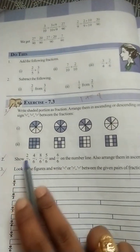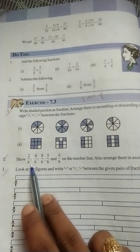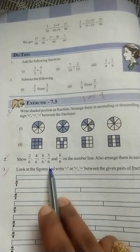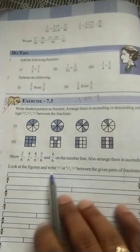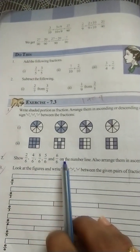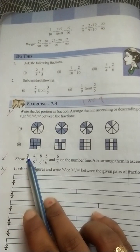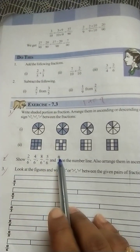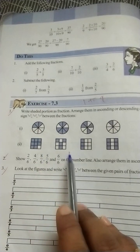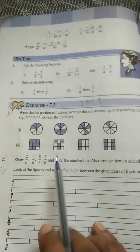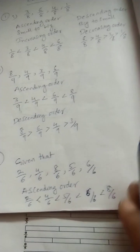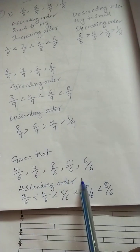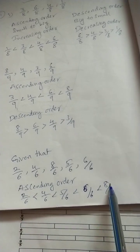Next is second question. Show 2 by 6, 4 by 6, 8 by 6, 5 by 6, 6 by 6 on a number line and also arrange them in ascending order. Ascending means small to big. First small number is 2, next 4, next 5, next 6, next 8. So ascending order: 2 by 6, 4 by 6, 5 by 6, 6 by 6, 8 by 6.